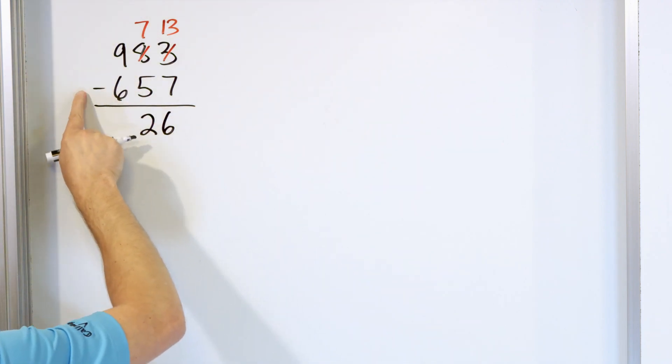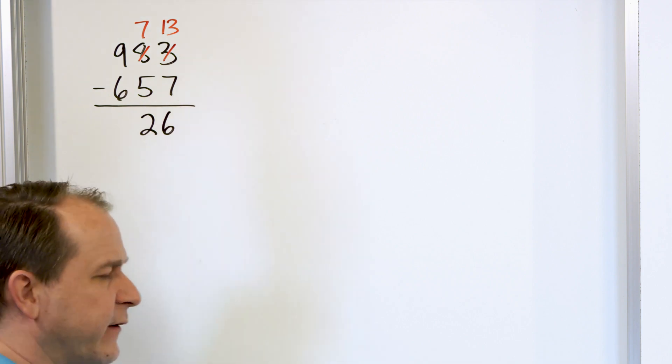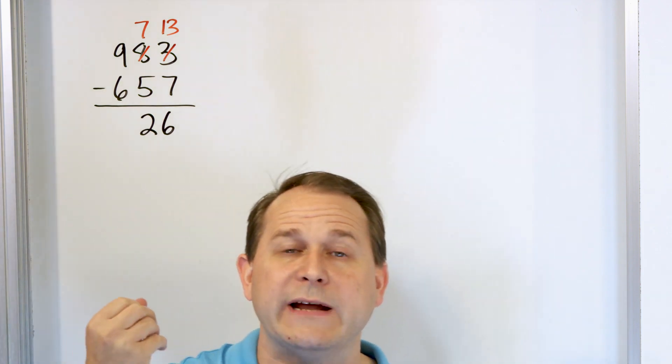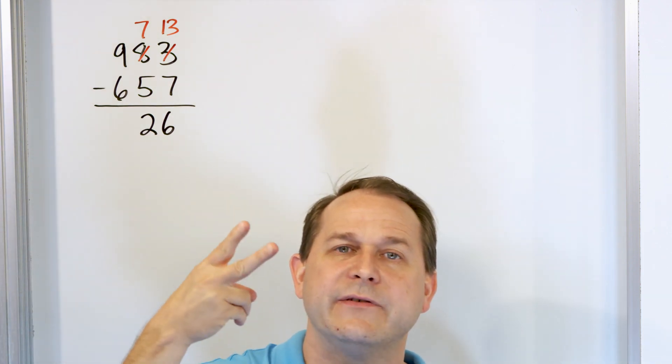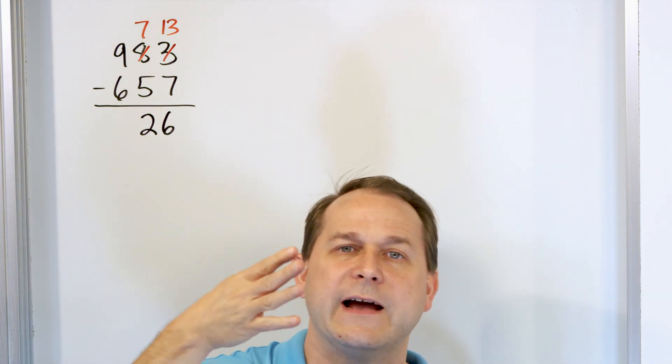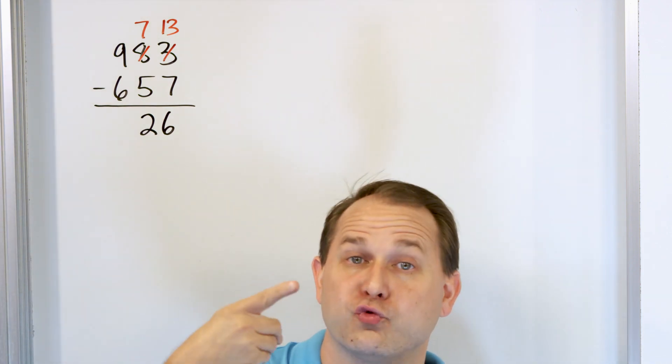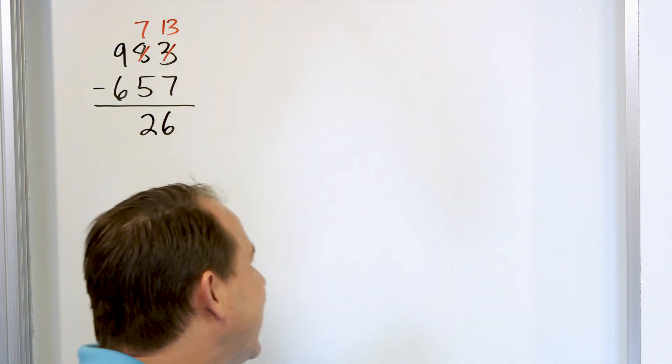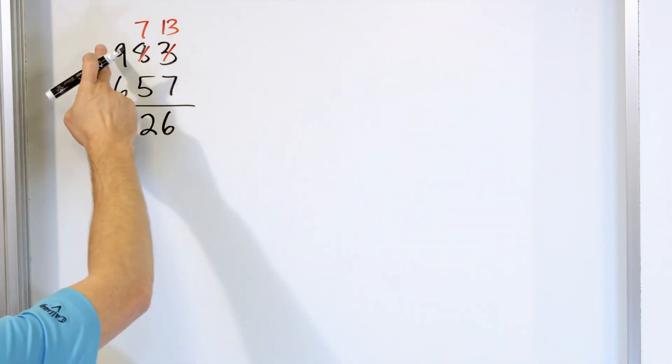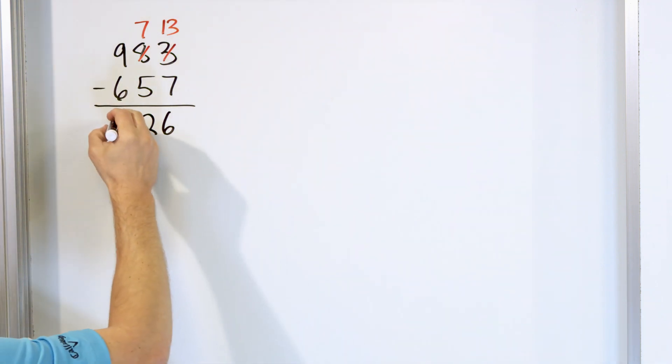And then we have 9 minus 6. We start with 9 and go down: 8, 7, 6, 5, 4, 3. We land on 3. So 9 minus 6 is 3.